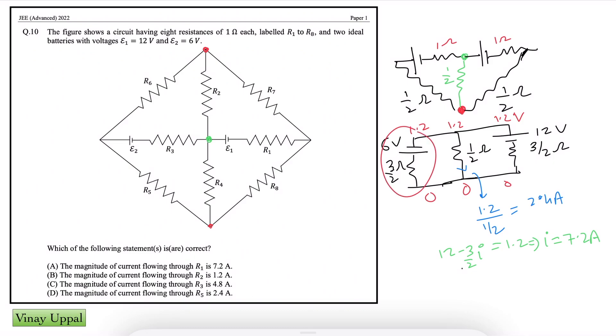And finally, in the leftmost branch, there is some I' current. So 1.2 plus 6 minus I' into 3 by 2 is 0. So that means, what is the value of I'? 1.2 plus 6 is 7.2 divided by 3, 2.4 multiplied by 2, 4.8. So I' is 4.8A.